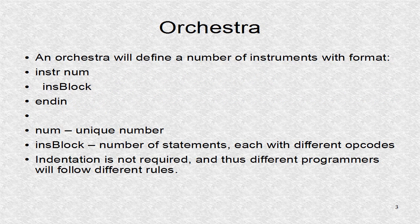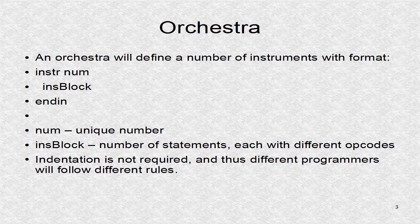The orchestra might have a number of instruments. Each instrument will have some different identifying number. After the instrument number, a number of statements follow. These statements are known as the instrument block. The last line in the instrument block is usually an out opcode to route the audio output. The instrument is delimited by the opcode instr and endin.